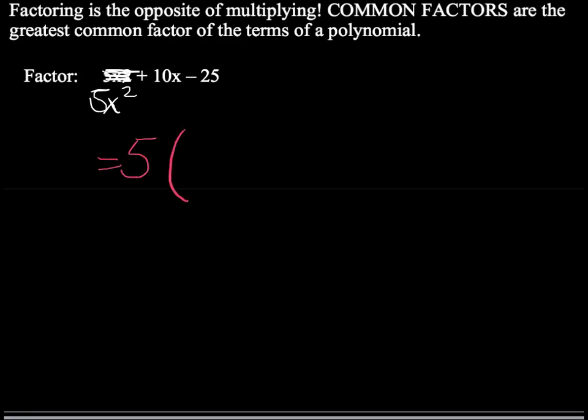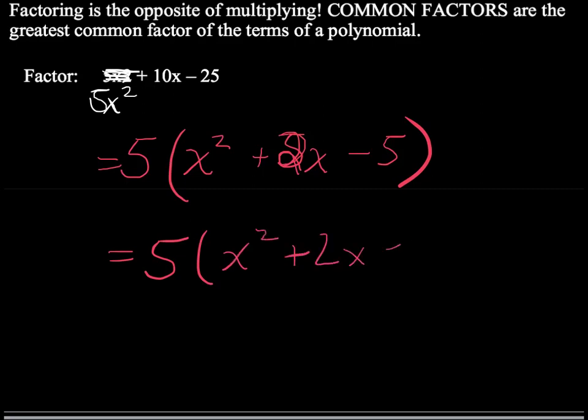It's going to be 5 times x squared plus 5x. Oh, sorry, times 2x. 2 times 5 is a very difficult question. And then 5 times minus 5 gives me minus 25. I'll rewrite that. That's 5 times x squared plus 2x minus 5.